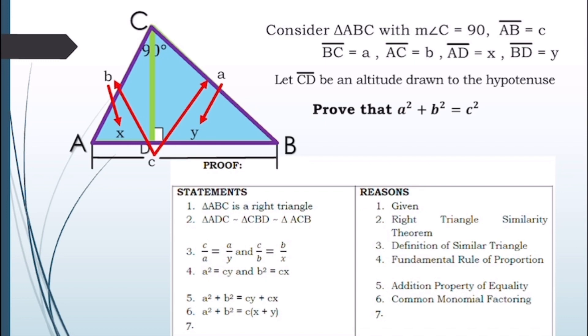For our seventh statement, applying the product law of exponents, since x + y = c, we get a² + b² = c². The reason is the product law of exponents. I hope you understand our lesson for today, which is proving the Pythagorean theorem. Thank you for watching.